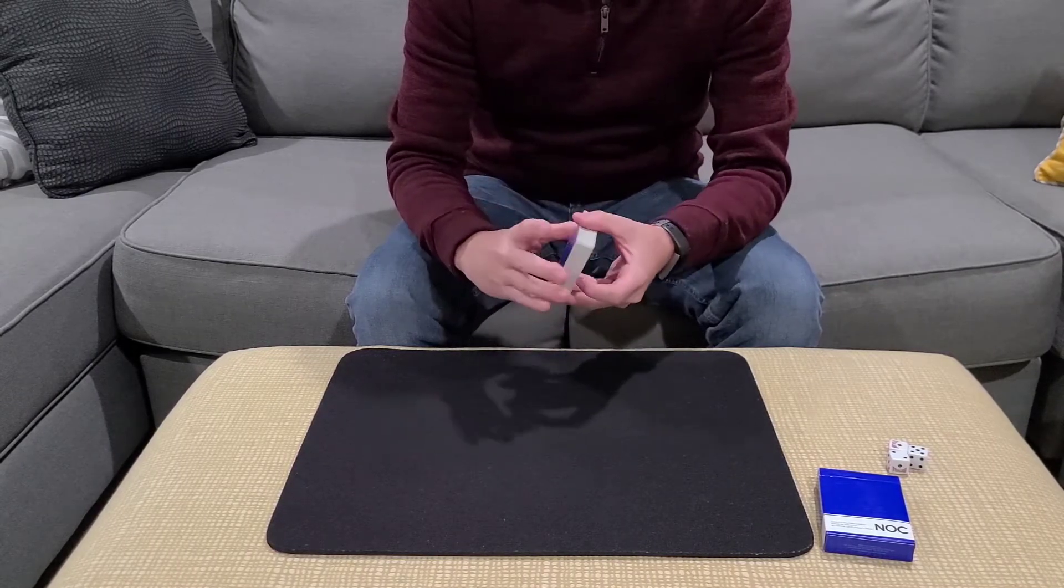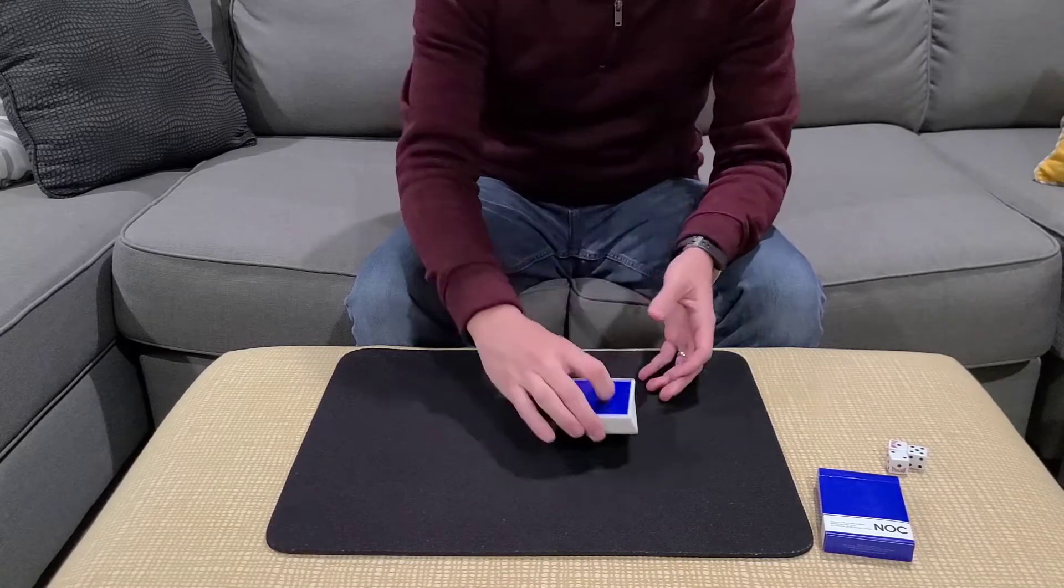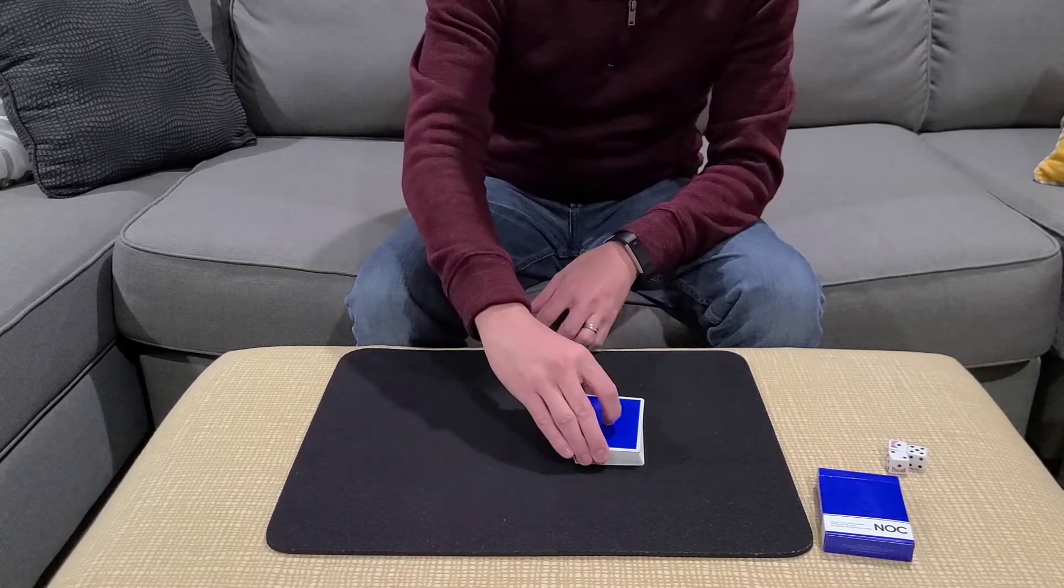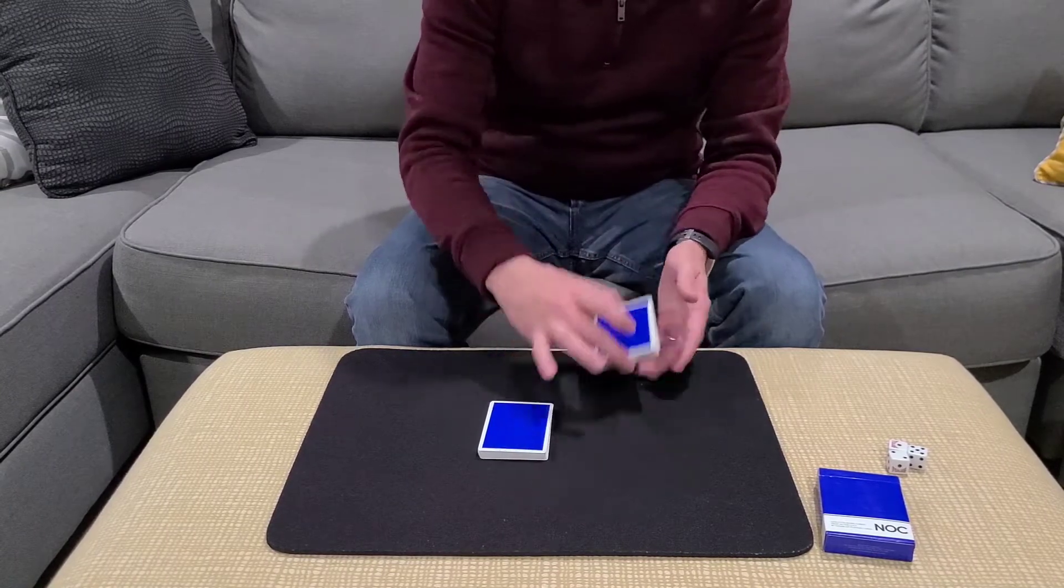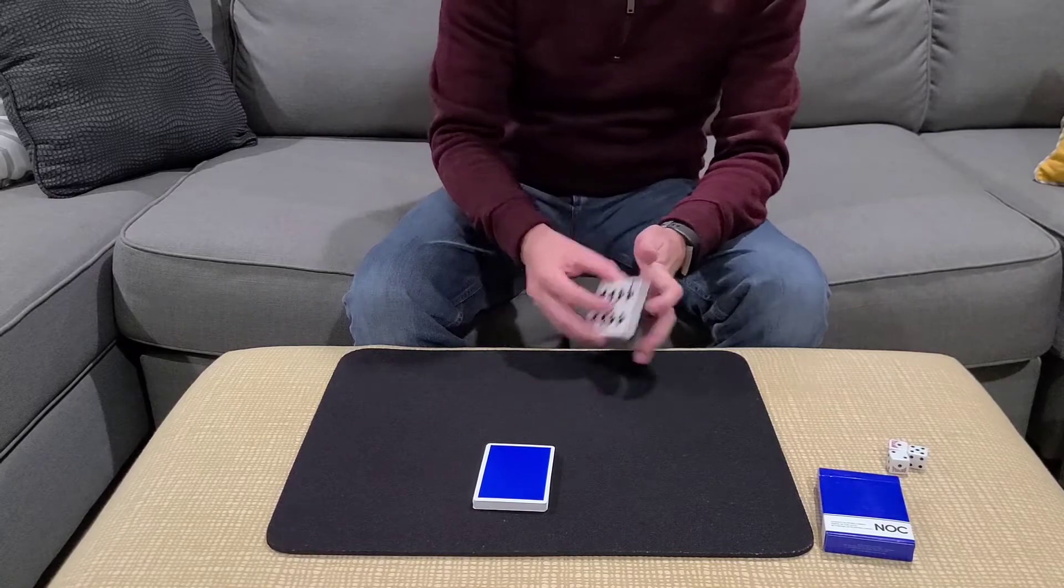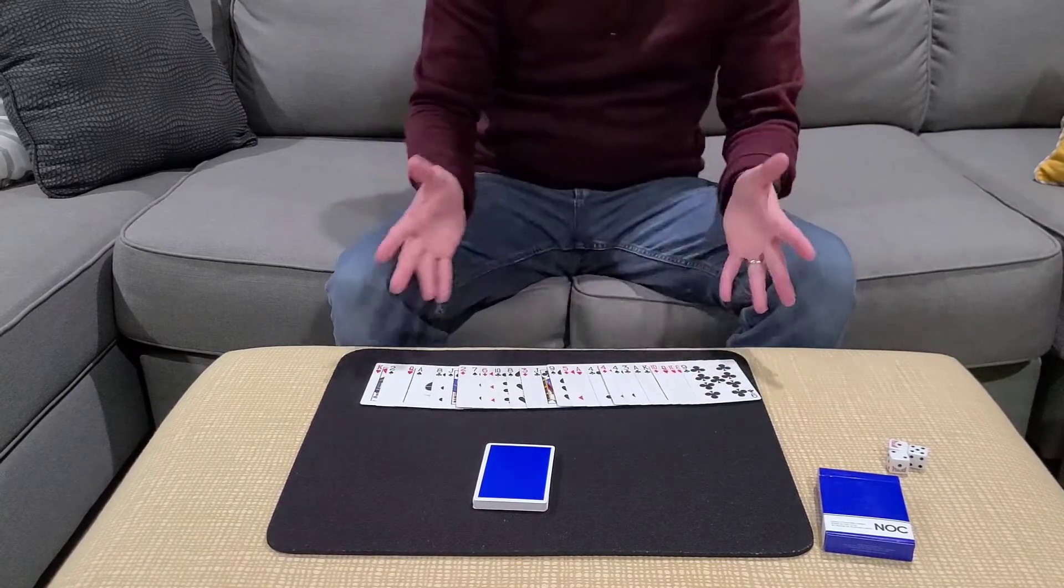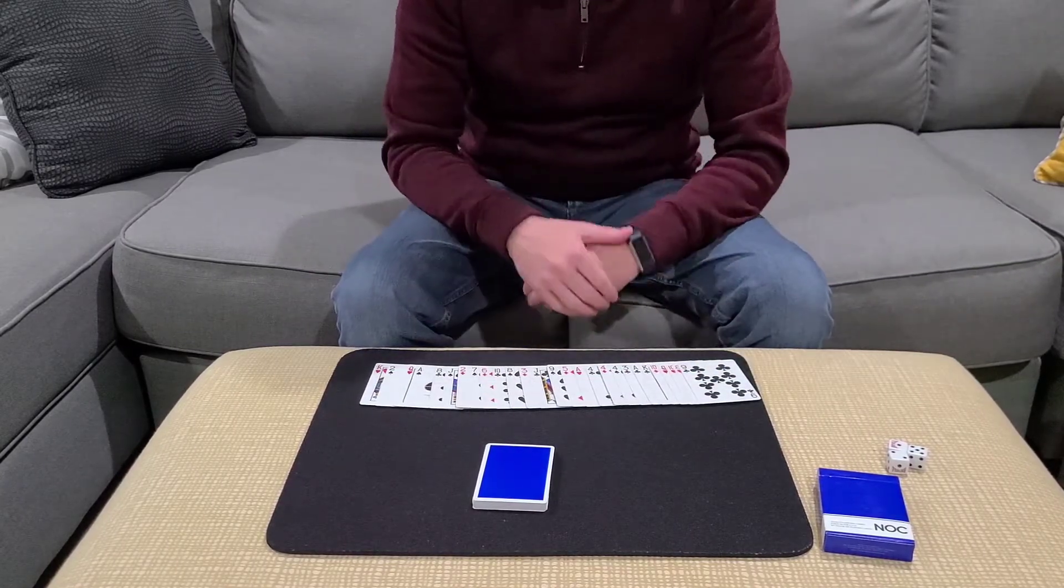So you'll start with the spectator mix, you would then have the spectator cut the deck off approximately into half, and then you would ask them just to point to either packet. Let's say they point to this packet, you'd say, okay, this is what I want you to do, you're going to spread the cards out, and I want you to just think of any card in your spread.